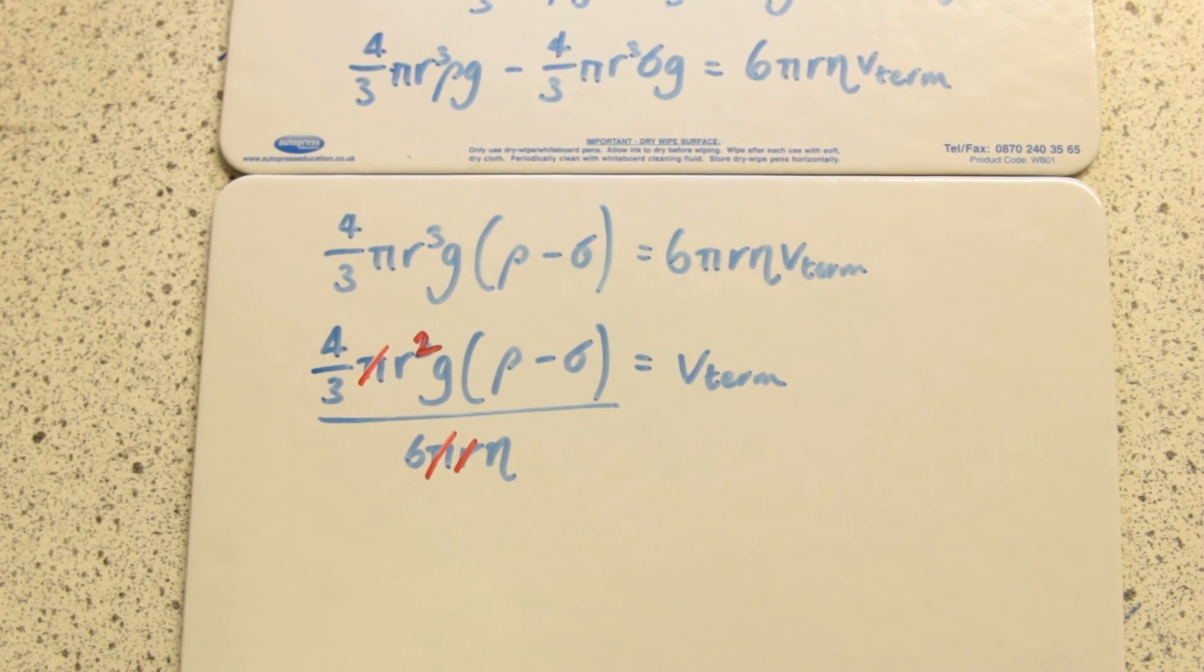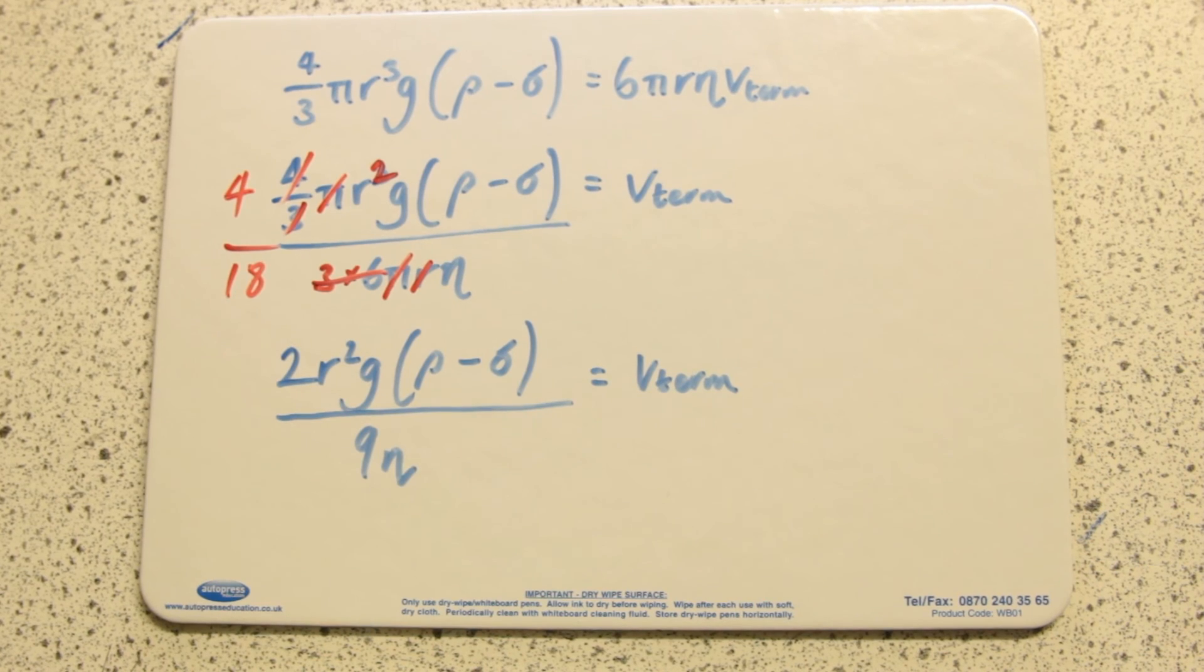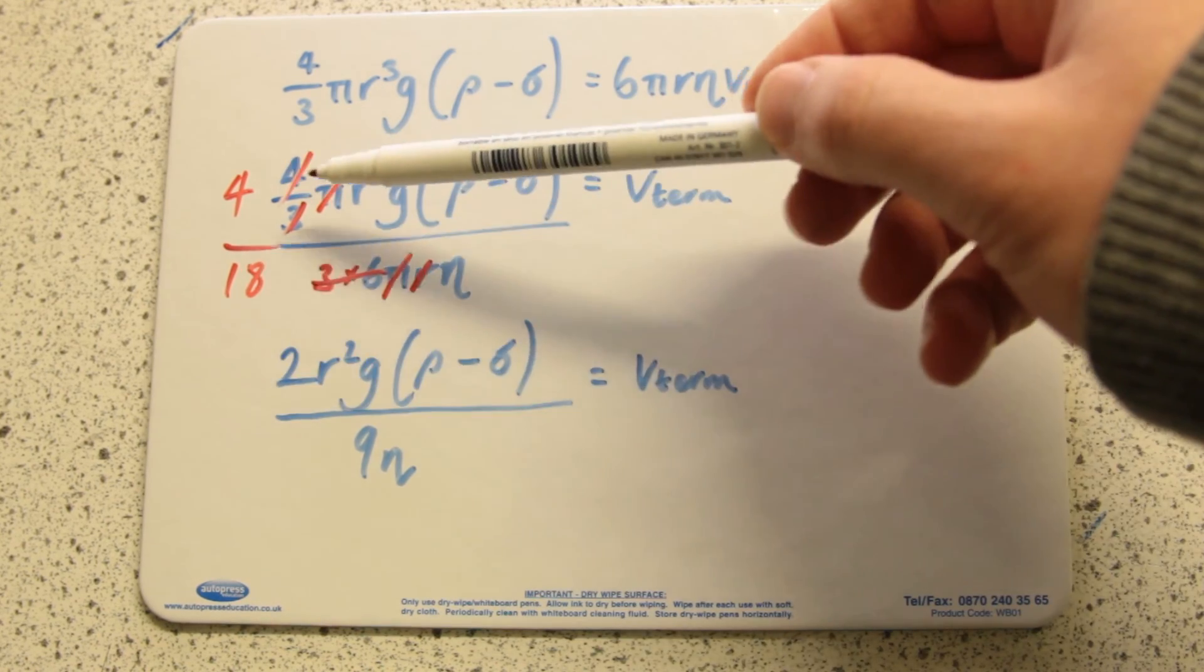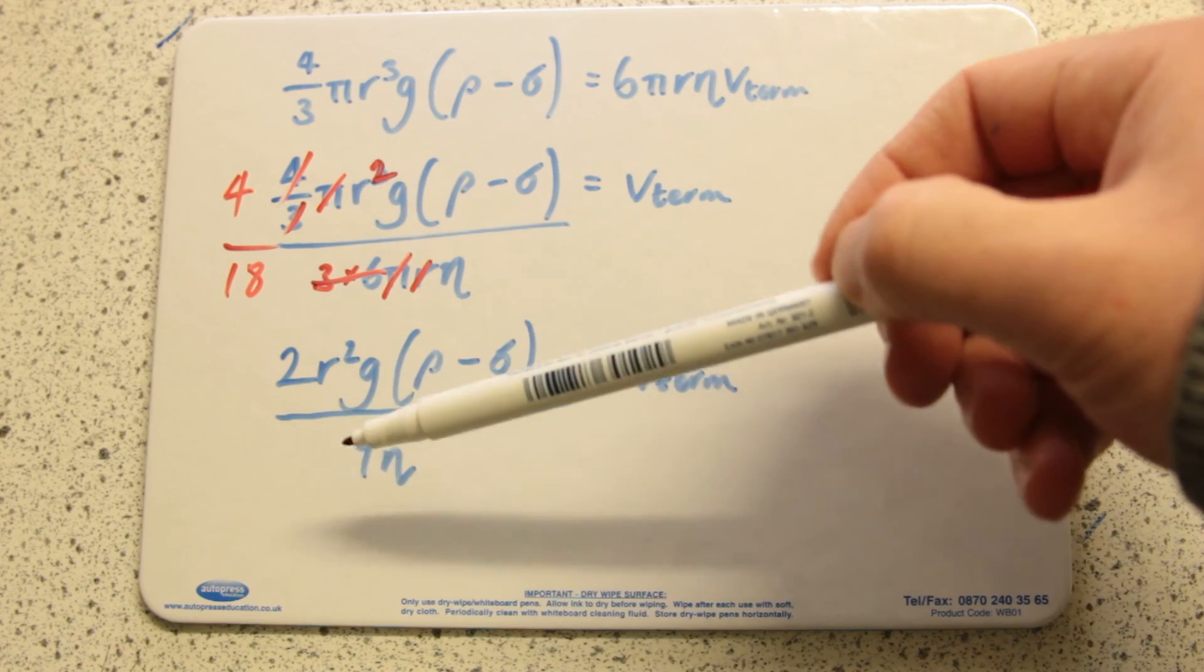So it's 2r²g times (ρ - σ) over 9η, and that is going to be the terminal velocity equation.